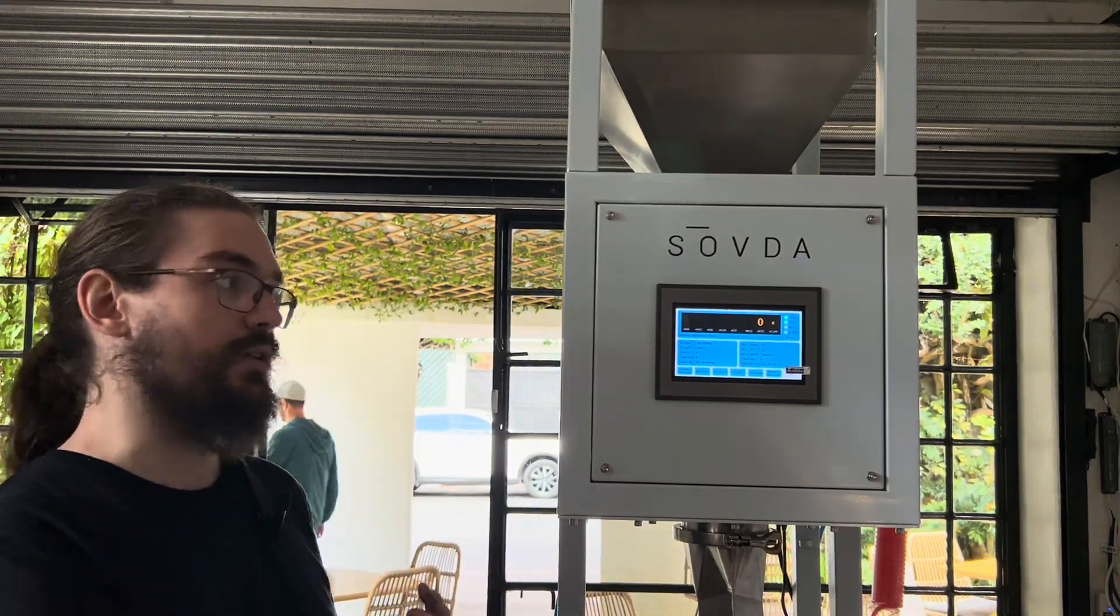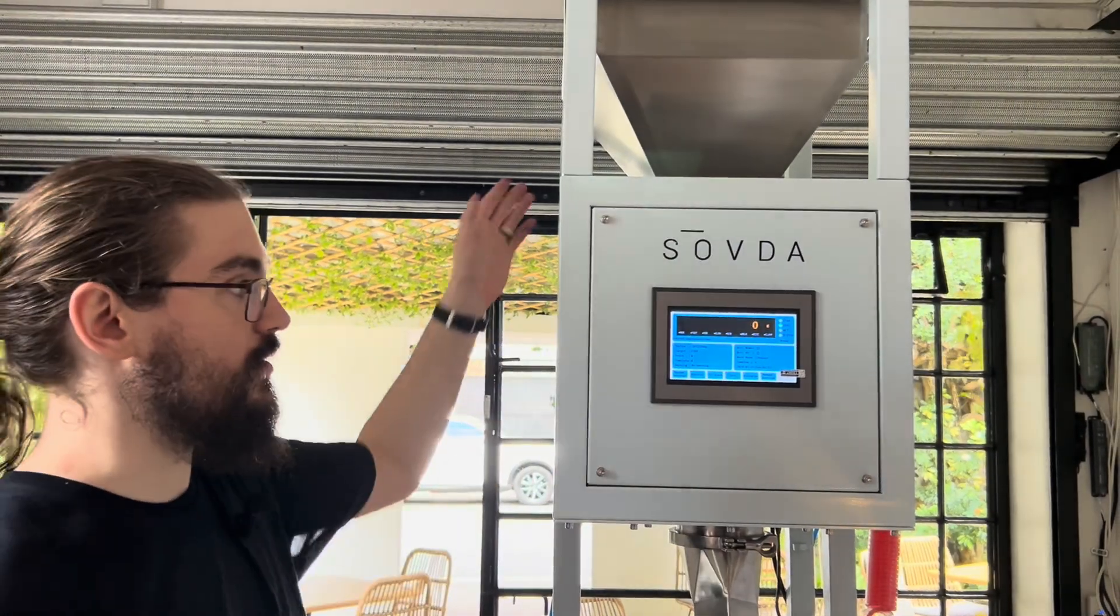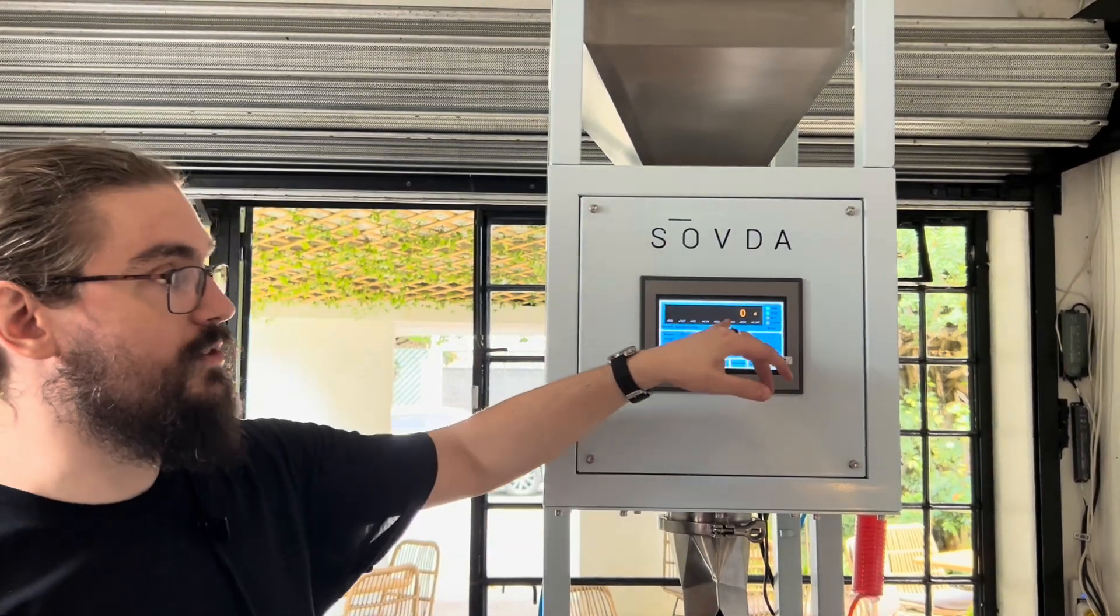So that concludes this companion video to the quick start guide. Your next steps are going to be to check the weights readout of this, which basically you're going to run it through a cycle and see if the amount of coffee that comes out matches what's displayed on the screen. And then you'll do some recipe creation or recipe modifications. All of that is covered in the manual and there will be a separate video to assist with those steps as well.